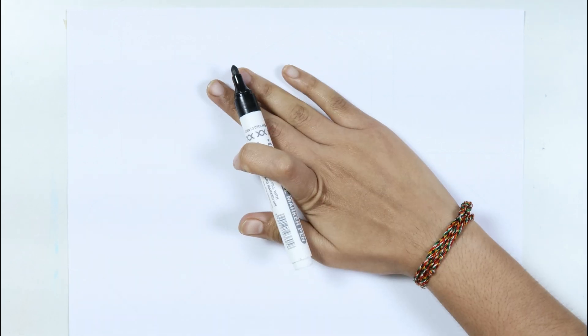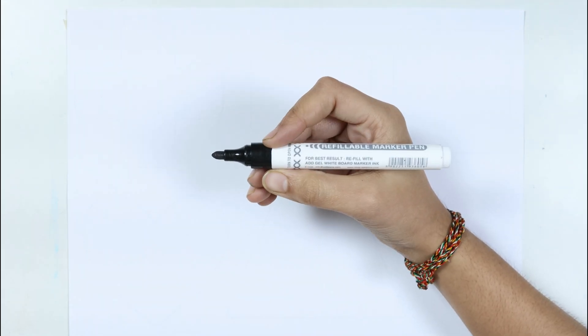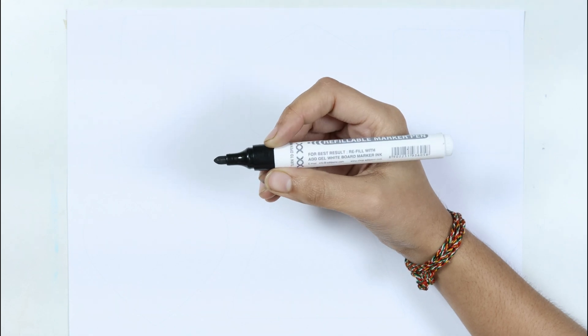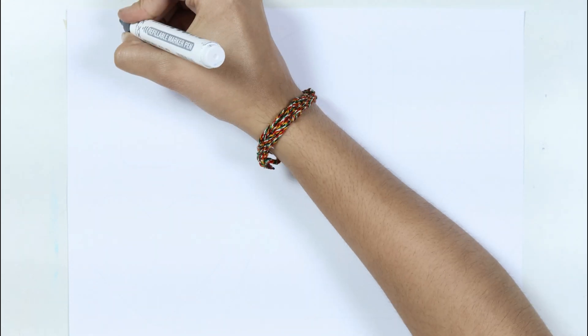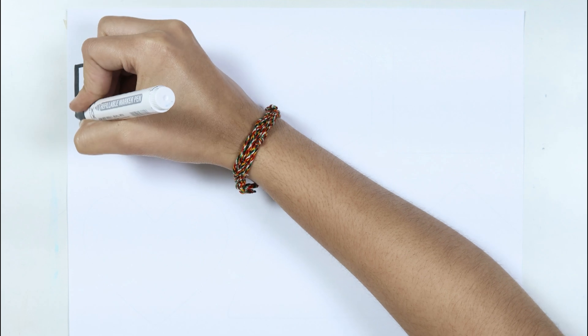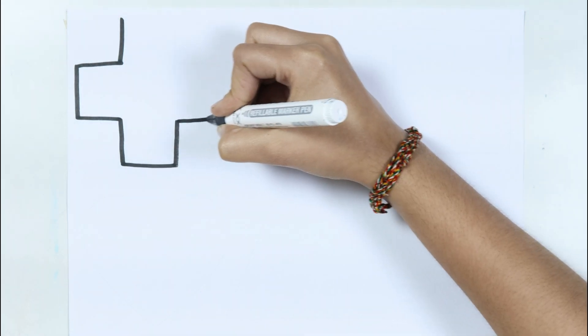Let's learn to draw some 2D shapes. This is the black color. Which color kids? This is the black color.